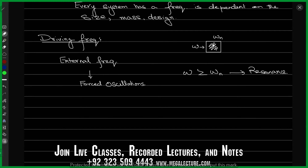The block was oscillating with its natural frequency, but I forced some oscillations on it by kicking it — hence these are called forced oscillations. You can solve the differential equation for this: M times d squared x over d t squared equals negative k x. Now with forced oscillations, there is some external force F added to the right-hand side. Solving this modified differential equation gives a different solution from the simple x equals x naught sine omega t.